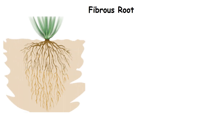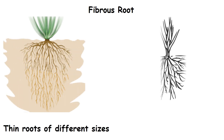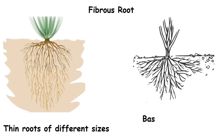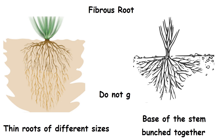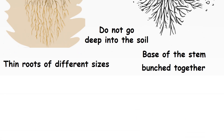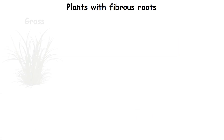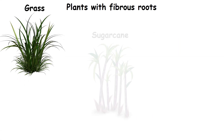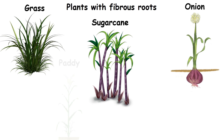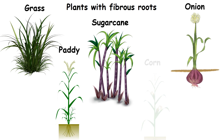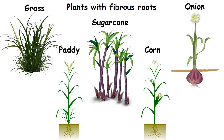Fibrous root. A fibrous root consists of many thin roots of different sizes. They grow from the base of the stem and are bunched together. They do not go deep into the soil. Plants such as grass, sugarcane, onion, paddy and corn have fibrous roots.